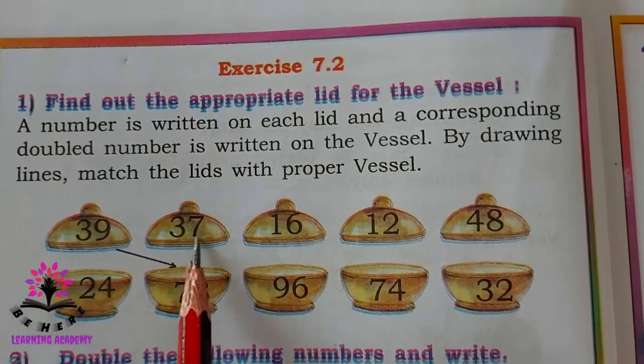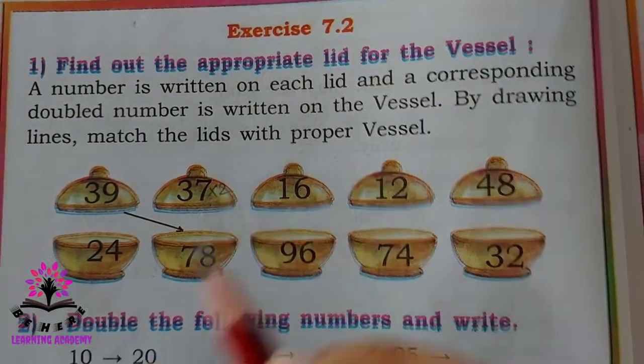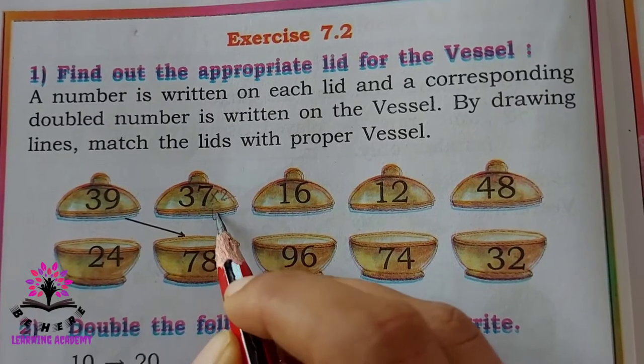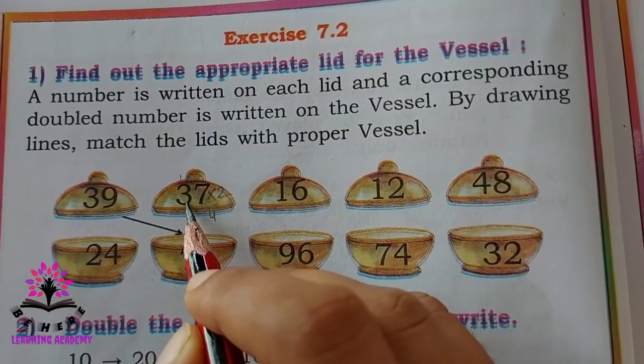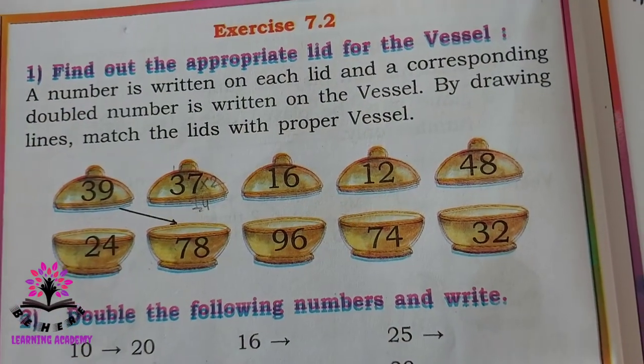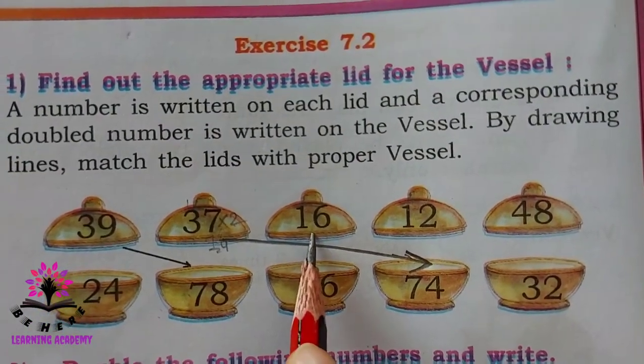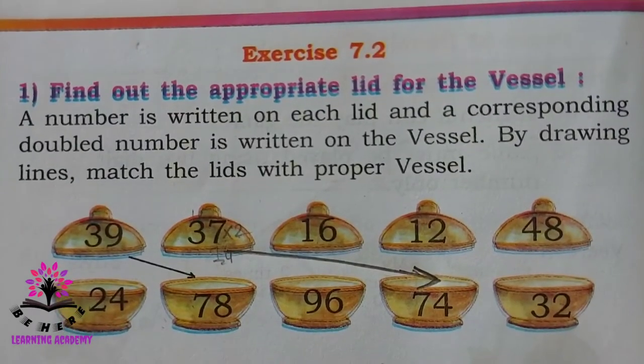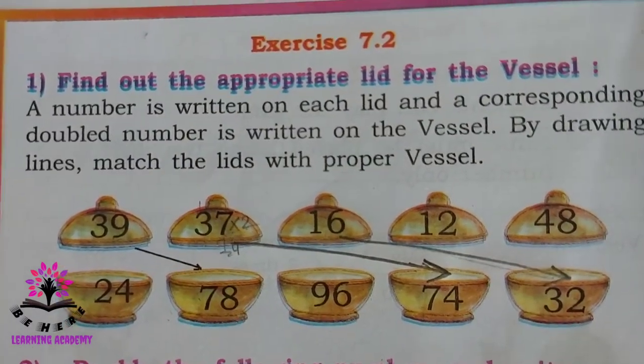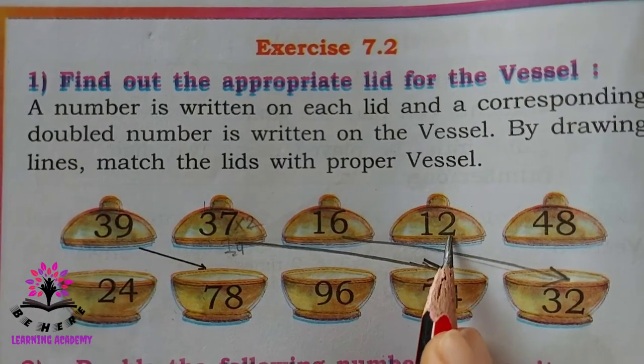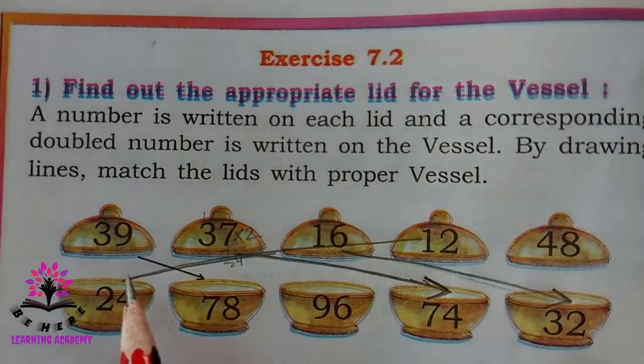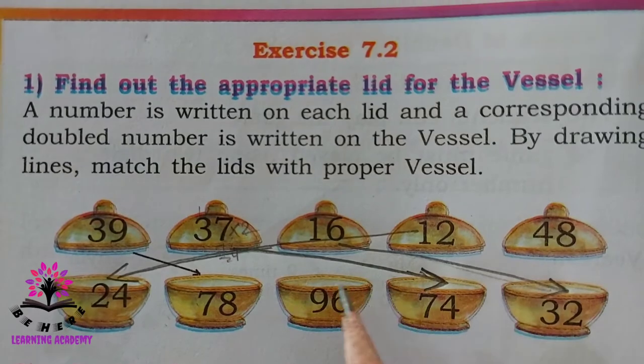See the next number 37, to double 37 we have to multiply by 2. When we multiply 7, 2, 7 is 14, 1 here, 2, 3 is 6 plus 1 it is 74. Where is 74? 74 is here, you have to join a line. See the next one 16, when you double 16, 16 into 2 or 16 plus 16, answer is 32. 32 is here, you have to join the line like this. Next one is 12. 12 plus 12 or 12 into 2, 12 plus 12 is 24. 24 is here. 48 when you double 48 it is 96.